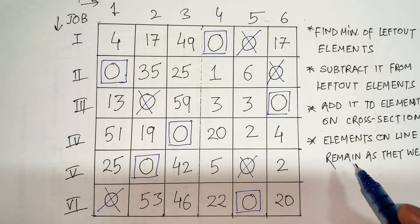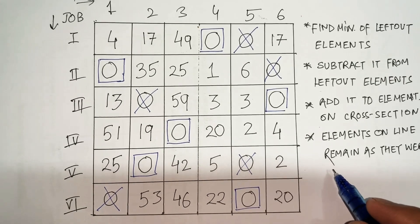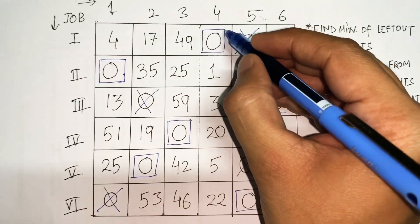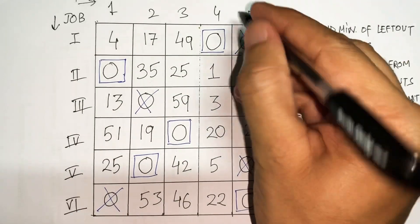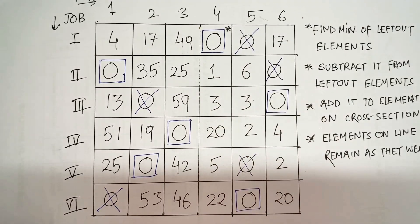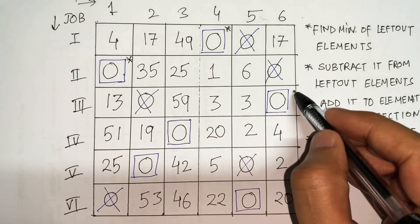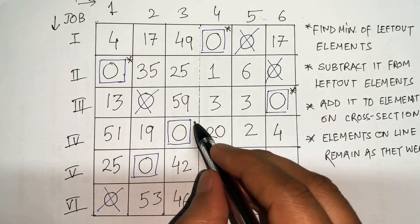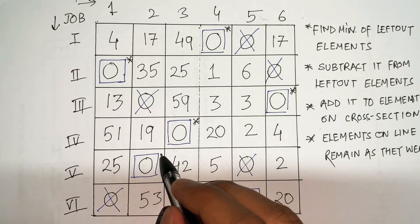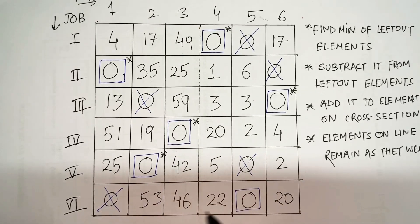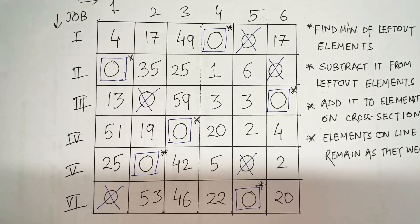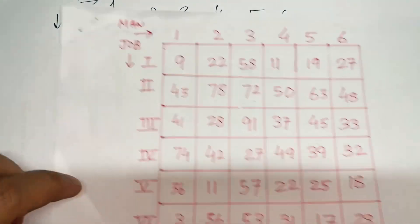The number of assignments: one, two, three, four, five, six — the degeneracy is removed! The assignments are: job one goes to person four, job two goes to person one, job three goes to person six, job four goes to man three, job five goes to man two, job six goes to man five. The problem is solved. Now to find the transportation cost I need to get back to the first table.